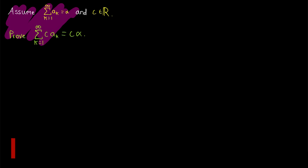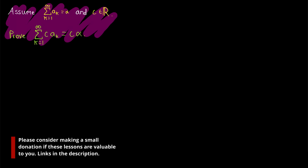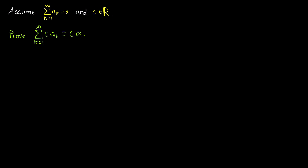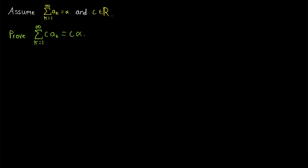We're already at the last super basic series limit law we're going to prove — things get a lot more interesting from here. Today we'll prove that if a series converges to alpha, then that same series but with every term multiplied by the same real number c converges to c times alpha.